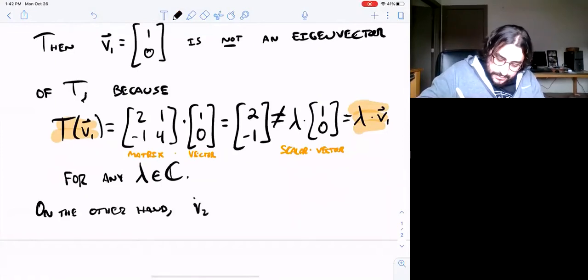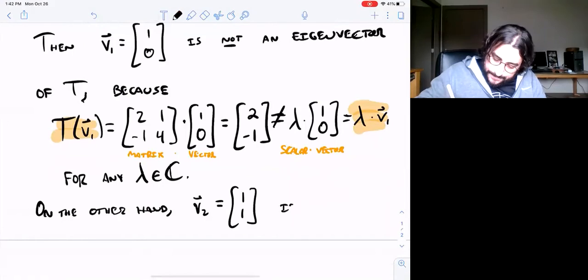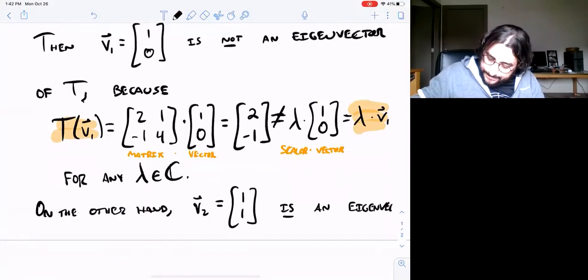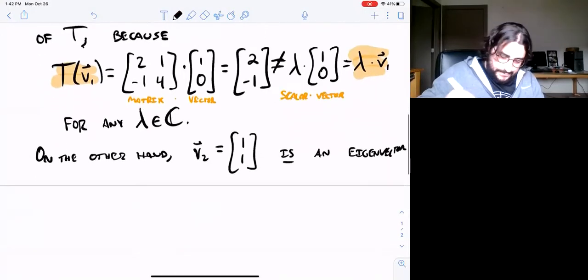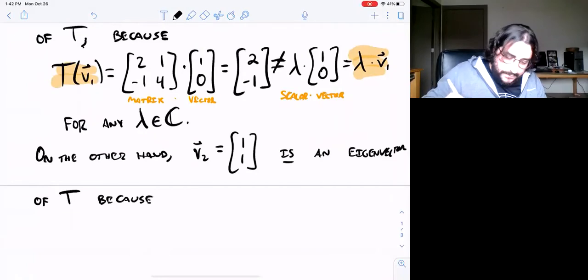Now on the other hand, the vector, let's look at say v2, if we look at v2 which I'm going to call (1, 1), this is an eigenvector of T.